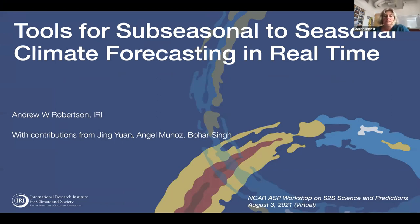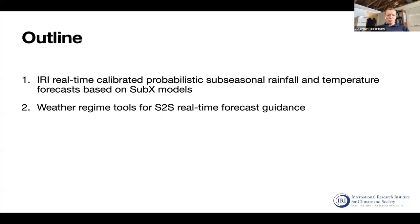What I thought I would do is talk about some of our real-time sub-seasonal forecasting that we've been doing at the IRI. My collaborators here are Jing-Jia Luo, Angel Munoz, and Bohar Singh. The outline will be to show you some calibrated probabilistic sub-seasonal rainfall and temperature forecasts based on SubX models, discussing calibration, multi-model ensembling, and probabilistic forecasts at sub-seasonal scales.